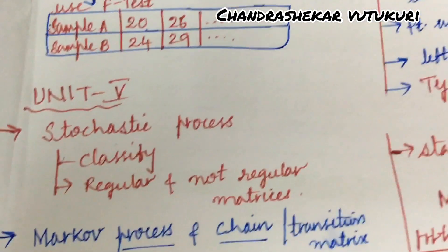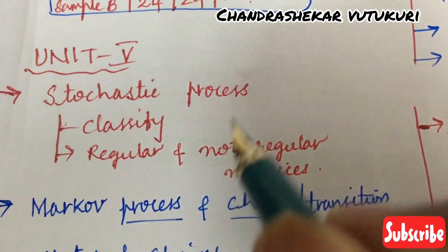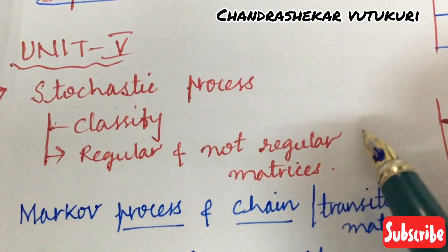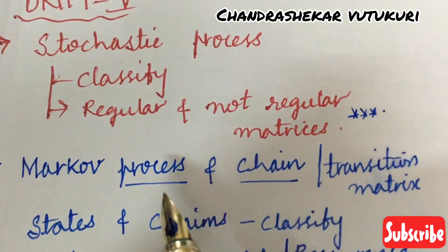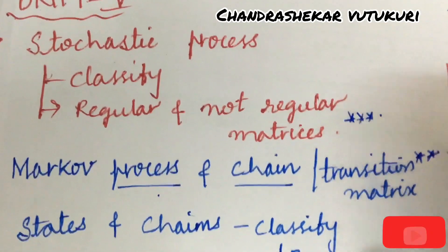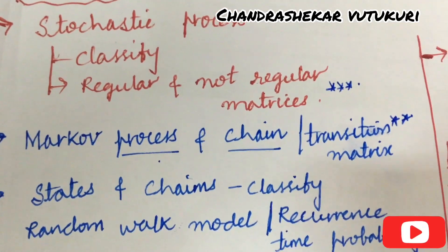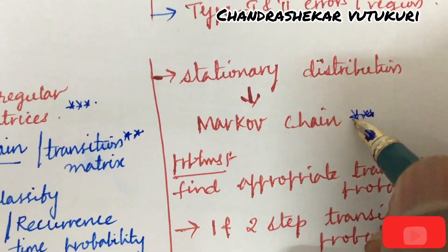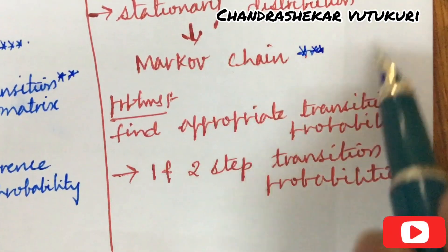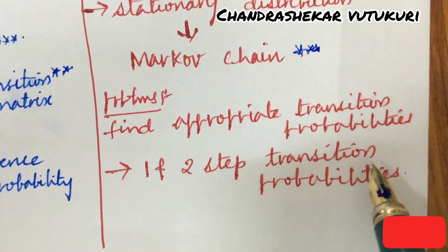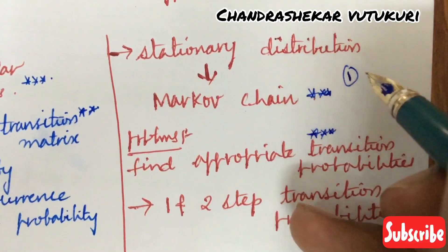Do not skip the fifth unit or the third unit, because they are very short in structure and very easy to work out. Stochastic processes — classify them — as well as regular and non-regular matrices will give you one question for sure. One more gunshot question is all about Markov chains and the process — the transition matrix, explain states and chains classified, random walk model, and recurrence time probability. Based on Markov chains you are going to get one problem for sure using stationary distribution — they will ask you to find transition probabilities for a given statement, as well as one-step and two-step transition probabilities. You will get one direct 15-mark question from this unit, dear students.